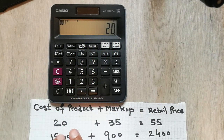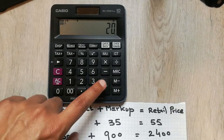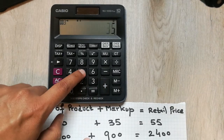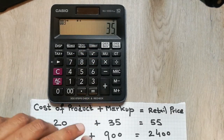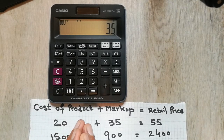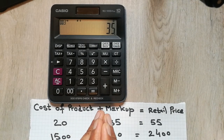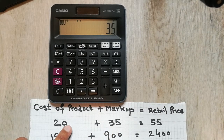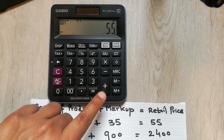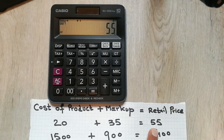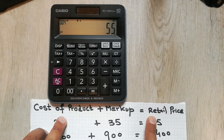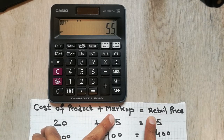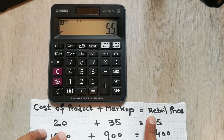You can see here I put the cost of product as 20, and I add the markup of 35, because I add the operational cost and also the profit. So 35 markup plus cost of the product 25 equals 55. That is our retail price — cost of product plus markup equals retail price.